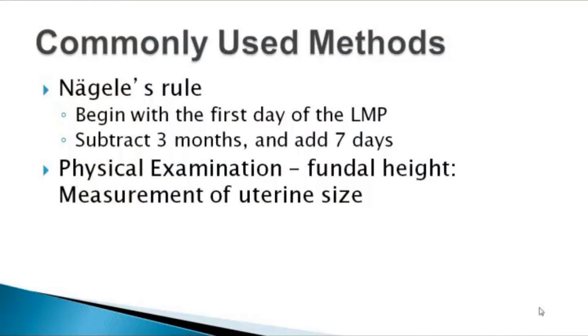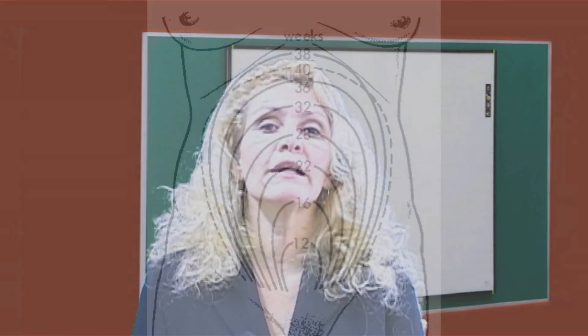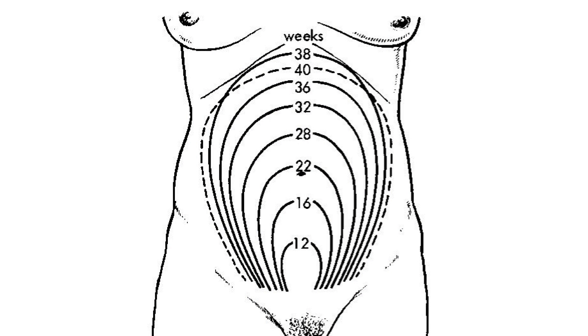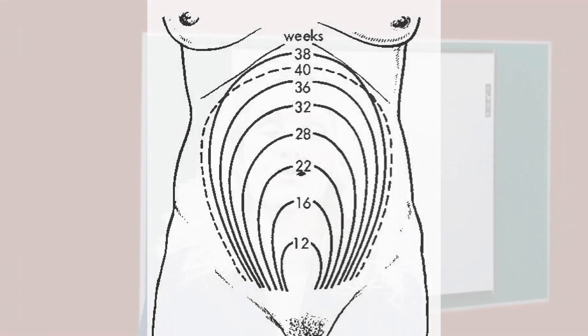To calculate the estimated date of birth, there are some common methods used. Naegele's rule is commonly used: you begin with the first day of the last menstrual period, subtract three months, and add seven days. The physical examination yields a fundal height measurement of uterine size. After 20 weeks, the fundal portion should be at the umbilicus, and up until 40 weeks that should correlate in centimeters — measured from the symphysis pubis to the fundal height, which should correlate with gestational age.